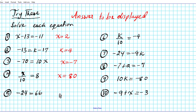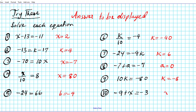Number 5: B equals negative 4. Number 6: K equals negative 40. Number 7: K equals 6. Number 8: A equals 0. Number 9: K equals negative 8. Number 10: X equals 6.